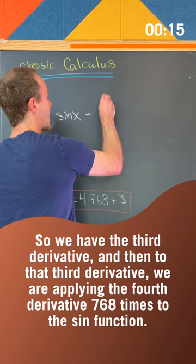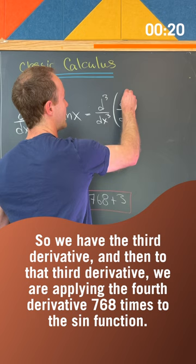So we have the third derivative, and then to that third derivative, we're applying the fourth derivative 768 times to the sine function.